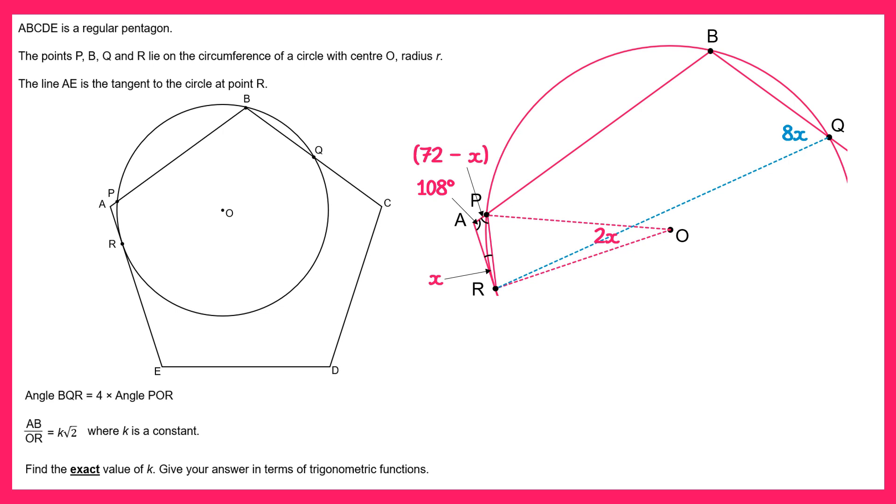Then we can look at this angle here angle RPO. If we focus on the triangle OPR we know that's an isosceles triangle since two of the sides are radii. So if you subtract 2x from 180 you get 180 minus 2x and then half that to get the angle, you end up with 90 minus x.